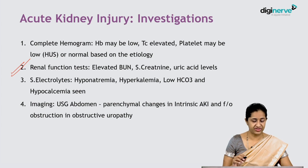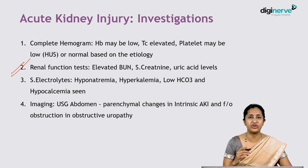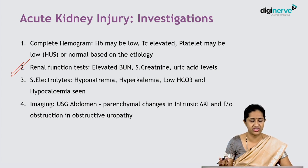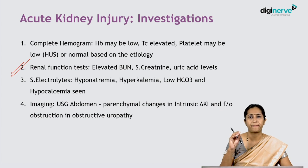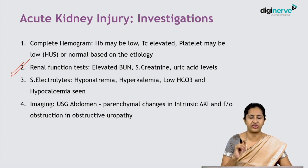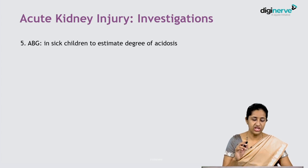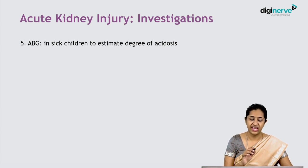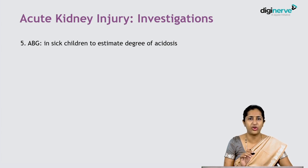Renal imaging — primarily ultrasound abdomen — will show parenchymal changes with loss of corticomedullary differentiation in intrinsic AKI. You may identify features of obstruction in obstructive uropathies, such as pelvic-ureteric junction obstruction, urolithiasis, or posterior urethral valve, by ultrasound or contrast-enhanced imaging. An arterial blood gas is done in sick children to estimate the degree of acidosis; a very low arterial pH in a child with AKI is a poor prognostic marker.